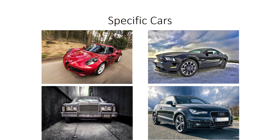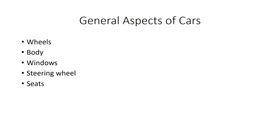But what they all have in common are their general characteristics, like wheels, body, windows, a steering wheel, and seats. All cars have these general aspects. So what they have in common is what is general between them.